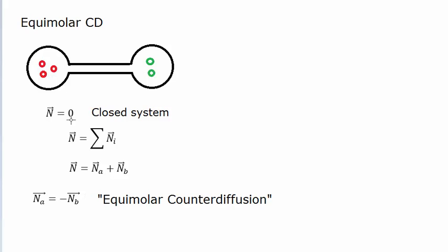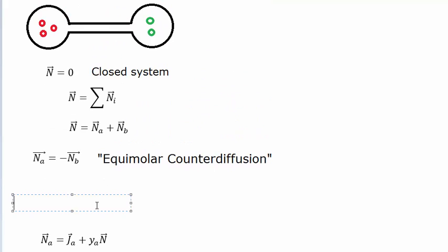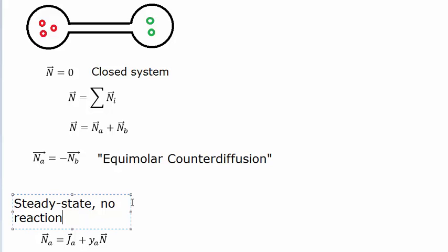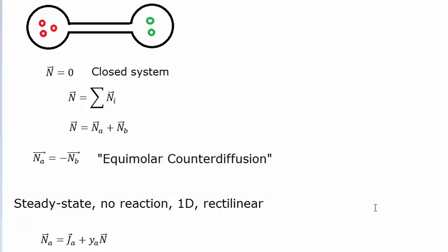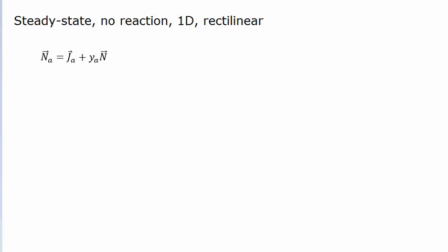This is what we mean by equimolar counterdiffusion — you have A moving in one direction and B moving in the other direction in an equimolar way. The problem we're always going to ask is: what is the concentration profile and what is the mass transfer for the system? We start here with the already-assumed steady state, no reaction, one-dimensional, rectilinear geometry form of the diffusion-convection equation.